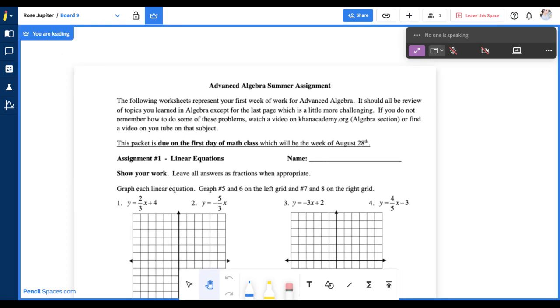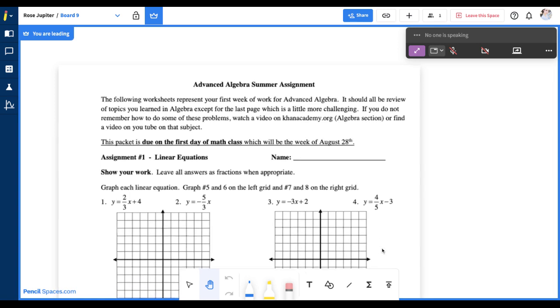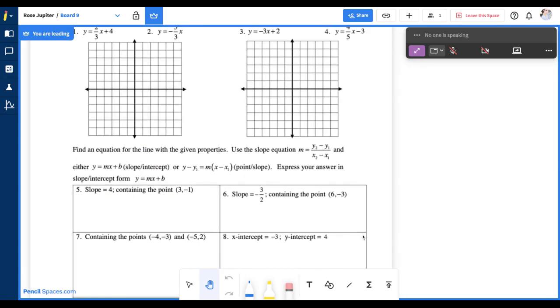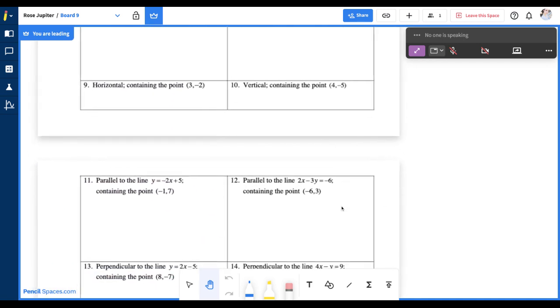When you have Leader Mode turned on, your participants can see the exact same thing that you're seeing on the whiteboard. This excludes any videos or gadgets, but as you can see, whenever I move around the whiteboard, my participants will be able to see the exact same thing that I'm seeing.